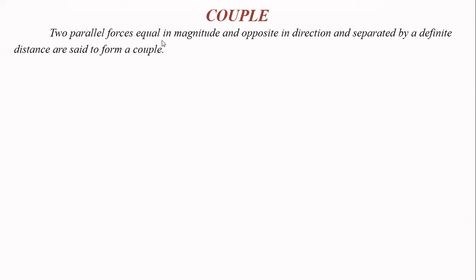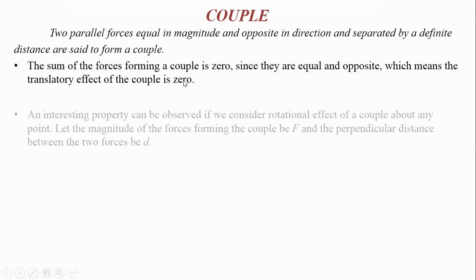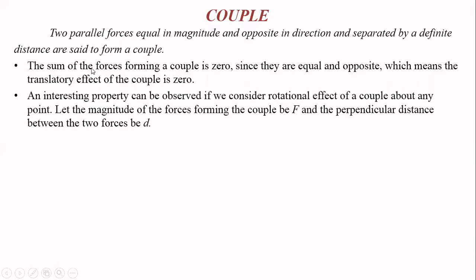If two parallel forces equal in magnitude and opposite in direction and separated by a definite distance are said to form a couple. The sum of forces forming the couple is zero since there is an equal and opposite force, which means that the translatory effect of the couple is zero.